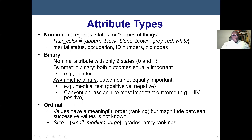Nominal attributes are categories, states, or names of things — we cannot add or multiply them, only count. Examples: hair color (black, brown, gray, red, white) — we can count how many employees have each hair color but cannot add them. Other examples: marital status (single or married), occupation, ID numbers, zip code. None of these make logical sense for arithmetic operations. In statistics, we can only find the mode for nominal data.